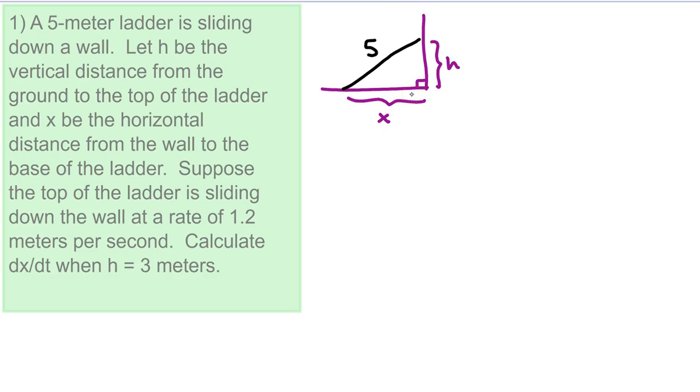Suppose the top of the ladder is sliding down the wall at a rate of 1.2 meters per second. So that's going to be dh dt, and because h is getting smaller that's going to be a negative rate. Calculate dx dt when h is 3. So that's what we want to find.